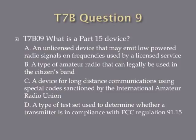Question 9. What is a Part 15 device? A. An unlicensed device that may emit low-powered radio signals on frequencies used by a licensed service. B. A type of amateur radio that can legally be used in the citizen's band. C. A device for long distance communications using special codes sanctioned by the International Amateur Radio Union. Or D. A type of test set used to determine whether a transmitter is in compliance with FCC Regulation 91.15.